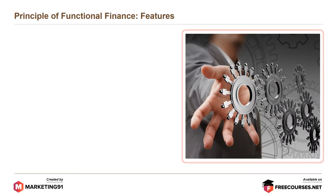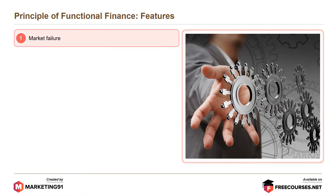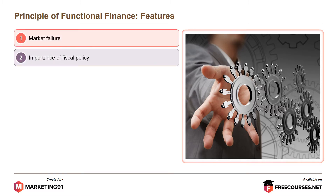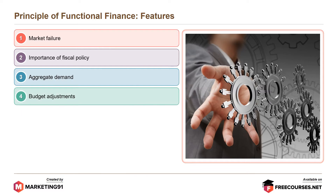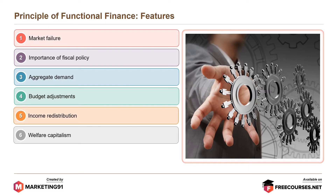The features of the principle of functional finance are: market failure, importance of fiscal policy, aggregate demand, budget adjustments, income redistribution, welfare capitalism, and social objectives.